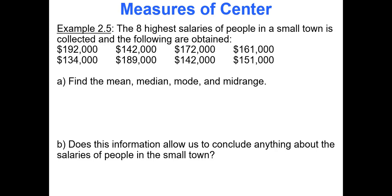Let's do another example. The eight highest salaries of people in a small town were collected: 192,000, 142,000, 172,000, 161,000, and so forth. We want to find all four measures of center — sample mean, median, mode, and midrange.